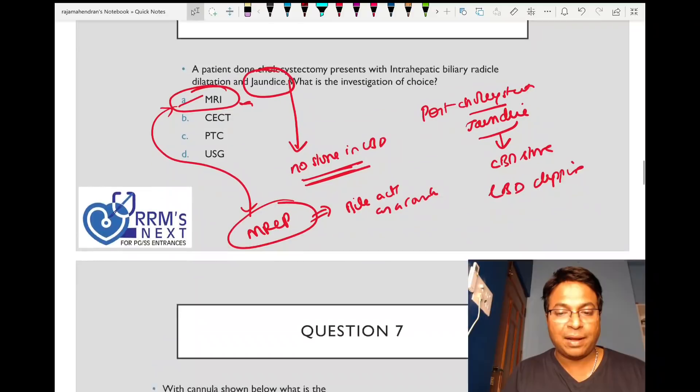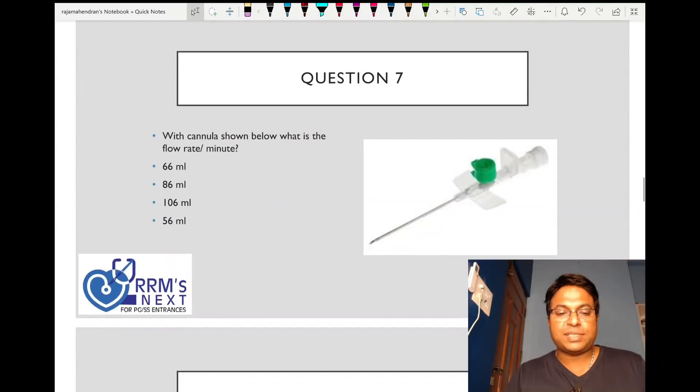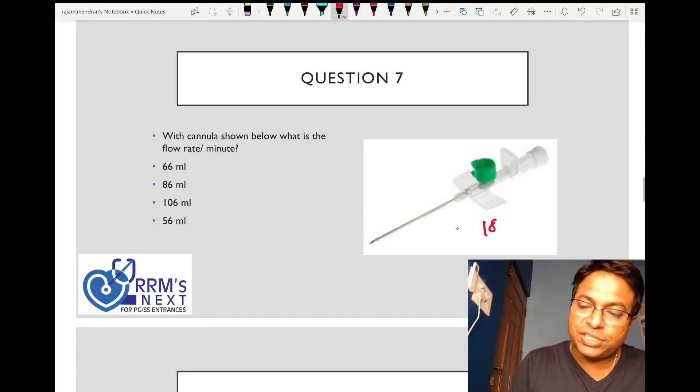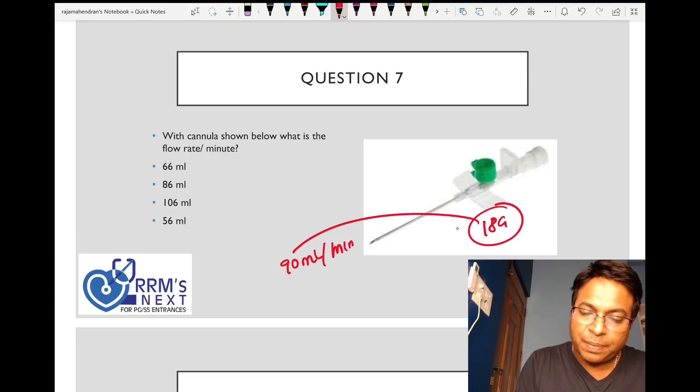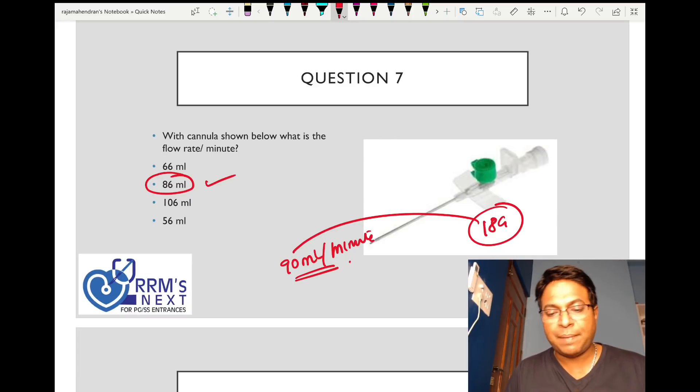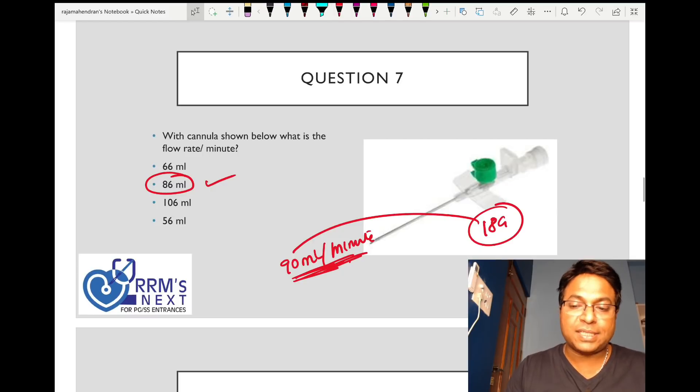This is a repeat question. This is an 18 gauge green cannula. 18 gauge cannula will flow 90 ml per minute. The answer is the nearby answer: 86 ml.